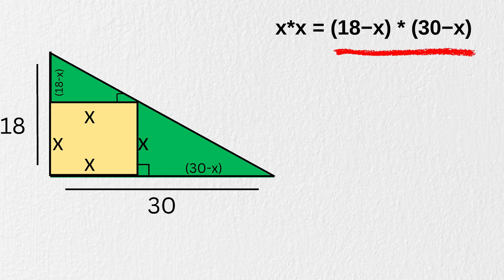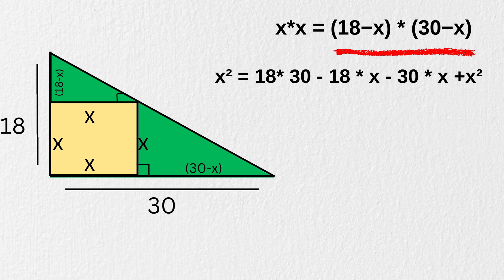Now, let's expand the right-hand side using distributive property. We get x squared is equal to 18 times 30 minus 18 times x minus 30 times x plus x squared.